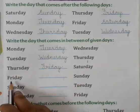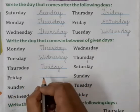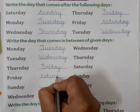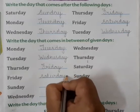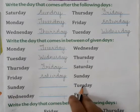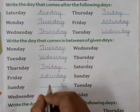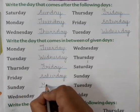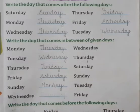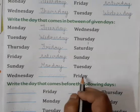Thursday, Friday, Saturday. Next is Friday, blank, Sunday — Friday or Sunday ke beech mein Saturday aata hai. S-A-T-U-R-D-A-Y, Saturday. Now next is Sunday, blank, Tuesday — Sunday or Tuesday ke beech mein aata hai Monday.